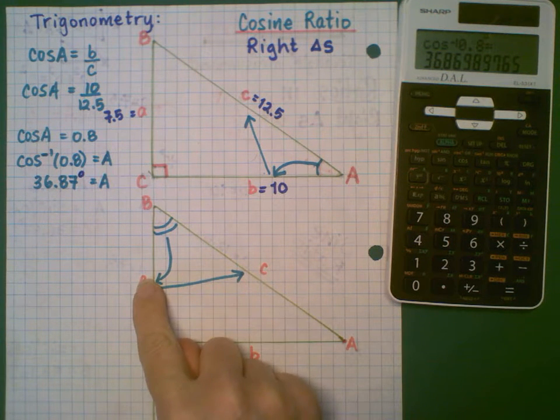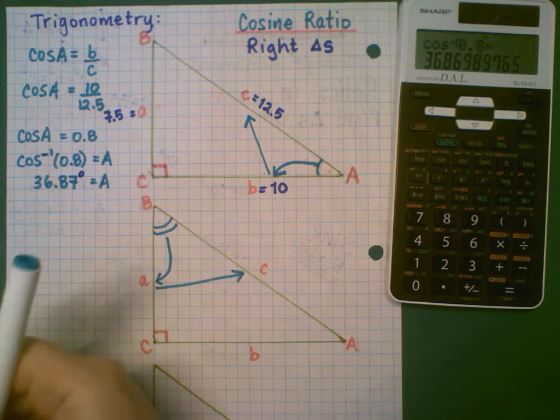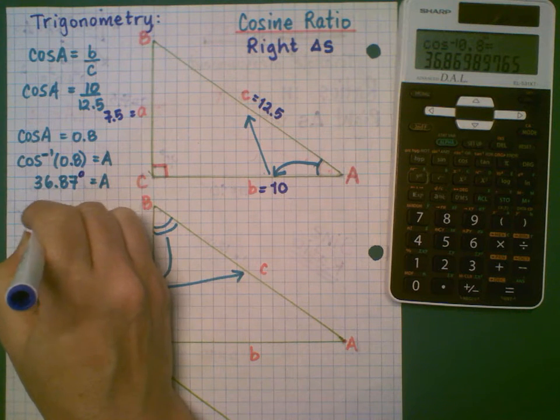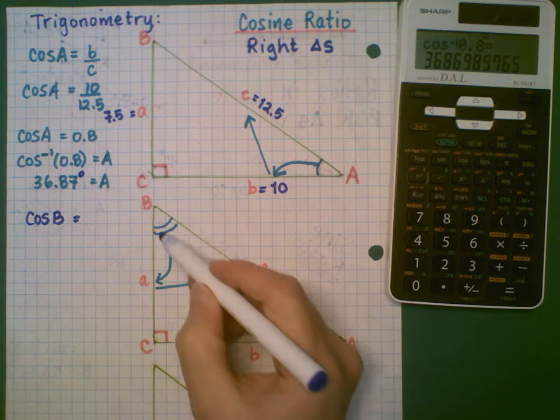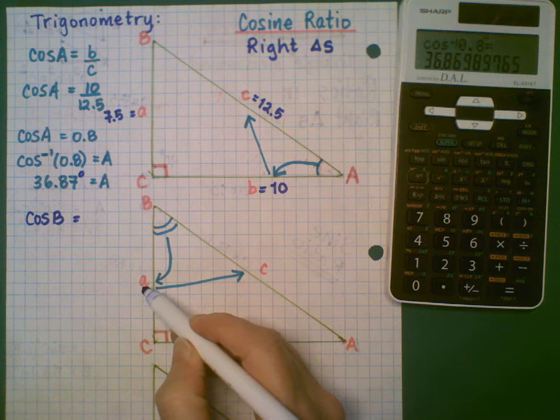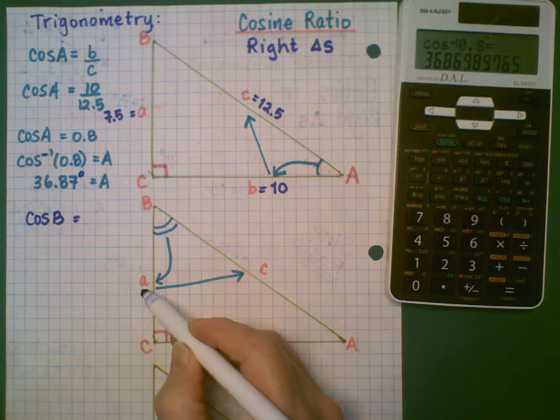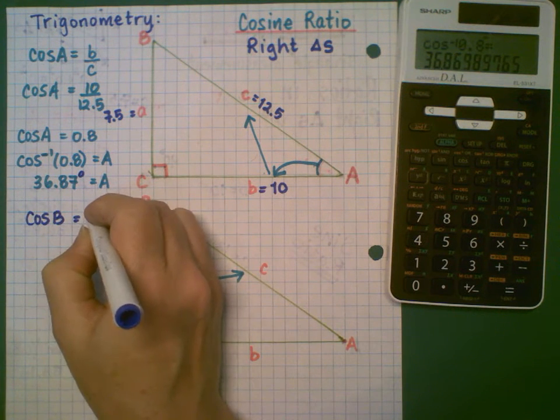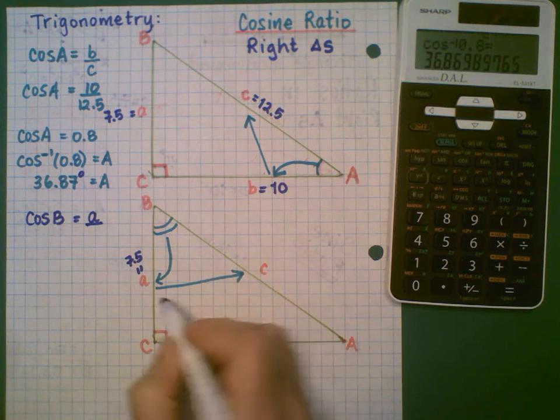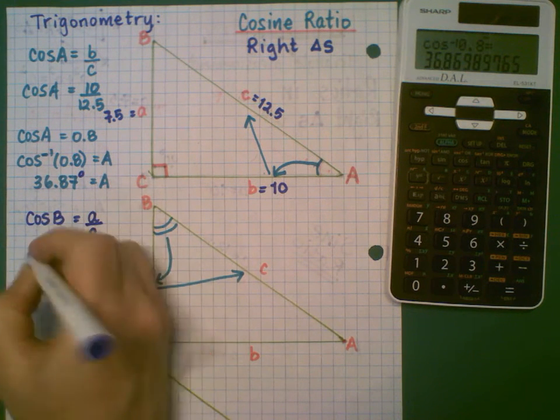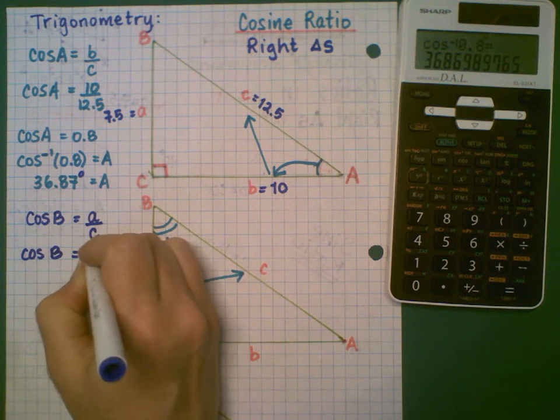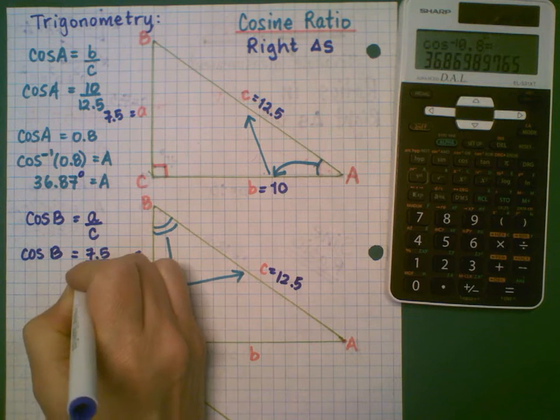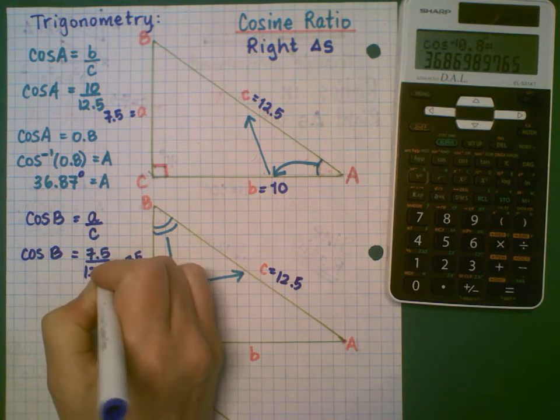Okay, if I went from angle B and use cosine to find angle B, it's going to look very similar. So cosine B, the leg next door or adjacent is length A, so that was 7.5. And the hypotenuse is C. C was 12.5.